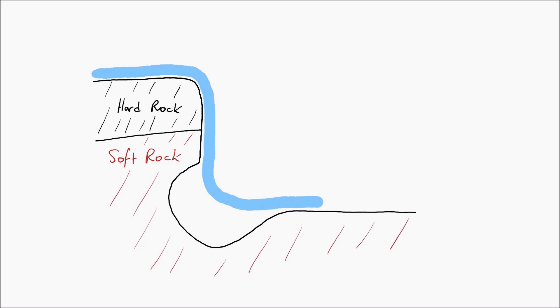When the water comes off the top of the hard rock layer and crashes down onto the soft rock layer, as you can see over here, it tends to form a plunge pool. The velocity and strength of the water enhances the erosion of the soft rock.